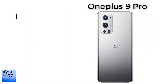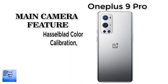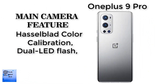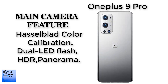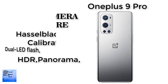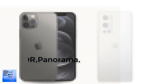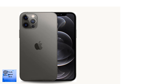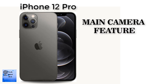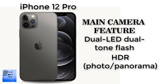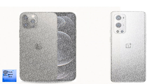The features of the main camera of the OnePlus 9 Pro include Hasselblad color calibration, dual LED flash, HDR, and panorama. The main camera features of the Apple iPhone 12 Pro include dual LED flash, dual tone, HDR, and panorama.